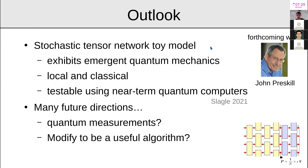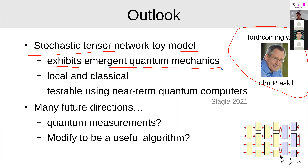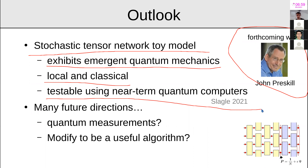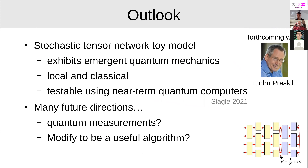That's the end of the second part. The stochastic tensor network toy model, based on forthcoming work with John Preskill, aims to show that in theory it's possible to have emergent quantum mechanics from a local and classical model. This is experimentally relevant because near-term quantum computers should be able to test for this possibility. Future directions include describing the measurement process using these models, and whether this emergent quantum mechanics model could become a useful algorithm.